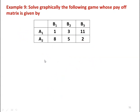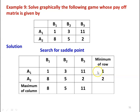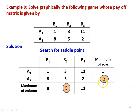Example number 9: solve graphically the following game. Player A has strategies A1 and A2; player B has strategies B1, B2, B3. The payoff matrix is: row A1 = [1, 3, 11] and row A2 = [8, 5, 2]. To search for the saddle point: row minima are 1 (A1) and 2 (A2); column maxima are B1 = 8, B2 = 5, B3 = 11. The maximin is 2 and the minimax is 5 — these are not equal, so there is no saddle point in the game.